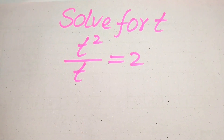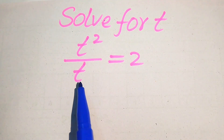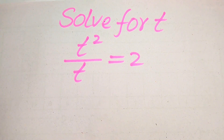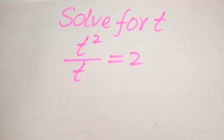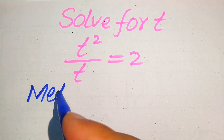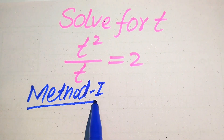Hello everyone. How to solve this problem for the values of t if we have t squared divided by t equals 2. First we find all the roots of this equation, and at the last we will verify which of the roots are solutions and which are extraneous roots. We solve this problem using two methods — I hope you like both, but if you have another method in mind, please write it in the comment section.